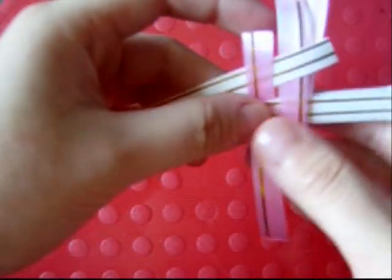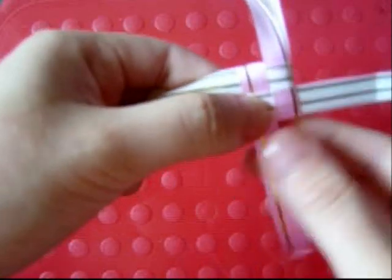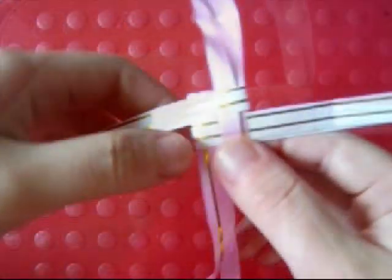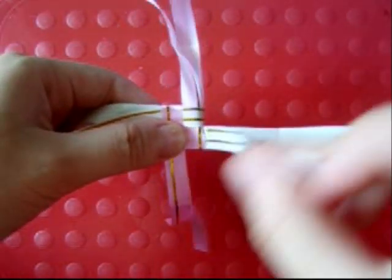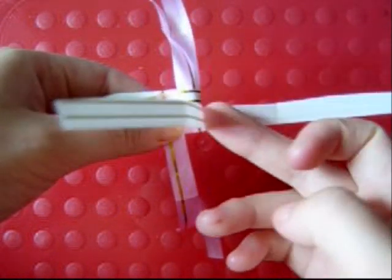Then tighten all four ribbons. So now you've got a windmill. Now take the first layer of the strips and fold from right to left.